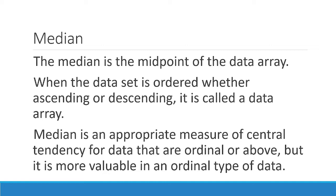Median is an appropriate measure of central tendency for data that have ordinal or above level of measurement, but it is more valuable for ordinal type of data. This is because when we compute the median, we don't involve all observations — we only look at what's in the middle. That's why median is more valuable in ordinal data, where there is no specific difference between values in the dataset.